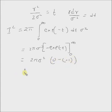Hence I square equals 2 pi sigma square. Therefore I equals square root of 2 pi sigma square.